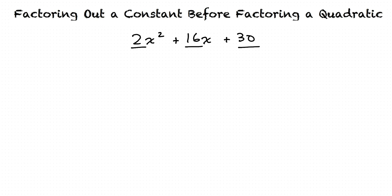We can divide 2 out of each of these numbers. So after dividing 2 out of each term of the polynomial, the result is 2 times the quantity of x² + 8x + 15.